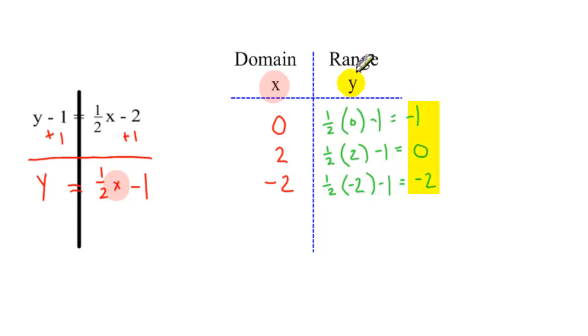Those values are going to be my ranges. So now all you have to do is rewrite them into coordinates to make them less confusing. My first coordinate is 0, negative 1. My second coordinate is 2, 0. And my third coordinate is negative 2, negative 2.